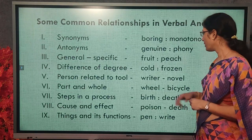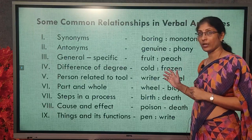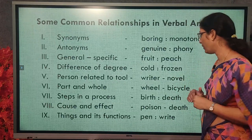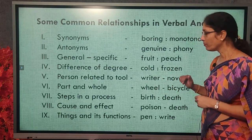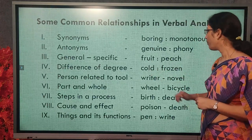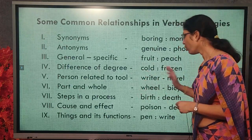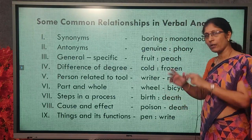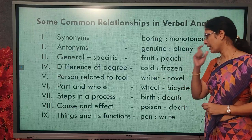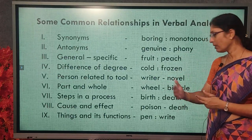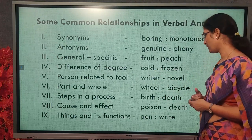Next is difference of degree — for example, cold and frozen. Cold means you have a chill; frozen is a more intense state, showing the intensity of cold. Next is person related to tool — writer and novel: a writer writes a novel. Then part and whole — a wheel is a part of a bicycle. Steps in a process — birth and death: when born and when we die, that is a process.